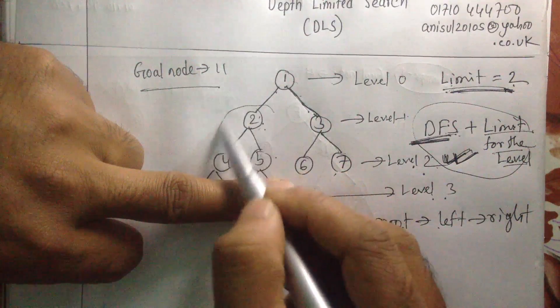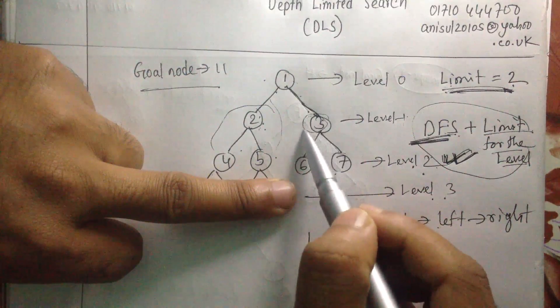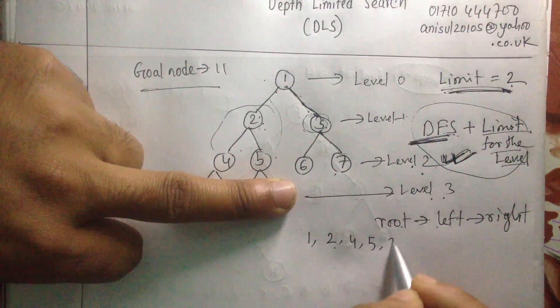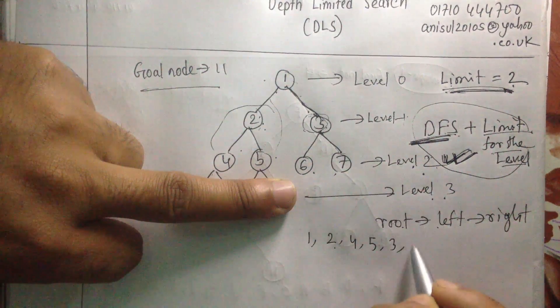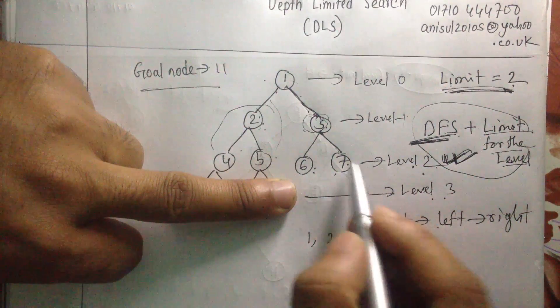Again, you're finished with root and the left side. Now you can go to the right. And again, this is a root so you have to give the priority to the root node. So you are going to write it down 3 here. Then you can come to the left side.